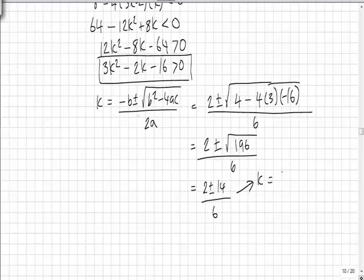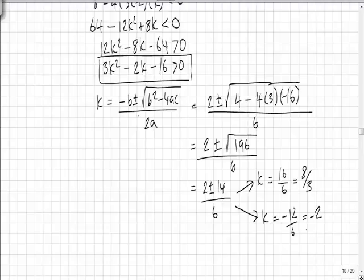The first one being 2 plus 14 over 6 which is 16 over 6 which is 8 thirds. The second value being 2 minus 14 over 6 which is minus 12 over 6 which is minus 2.